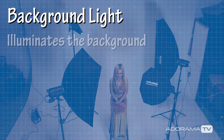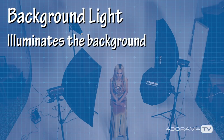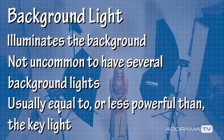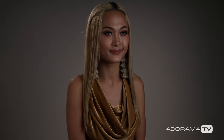The background light is used to add light to the background, and it's not uncommon to have several background lights, especially if you have a large background. It's usually metered equal to or less powerful than the key light. You can see that our background light gives a subtle highlight to the background while letting the edges go dark. Some light from the key and fill will also be falling on the background, so the final image will have a background that's a bit brighter.